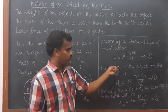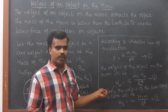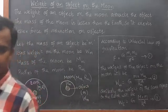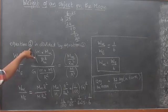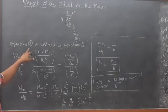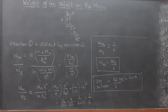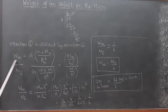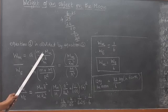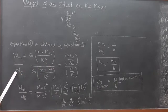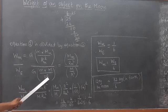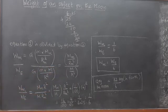So we have equation number two: W suffix M equals G into small m into M suffix M divided by R_M square. And equation number three: W suffix E equals G into capital M into small m divided by R square. We are going to compare these by dividing equation 2 by equation 3.